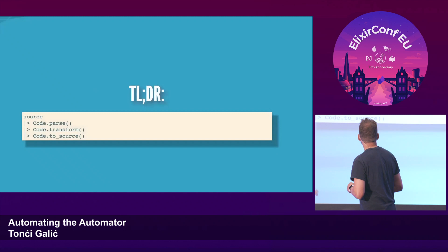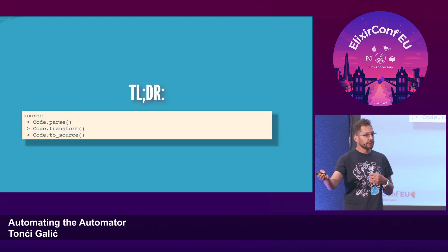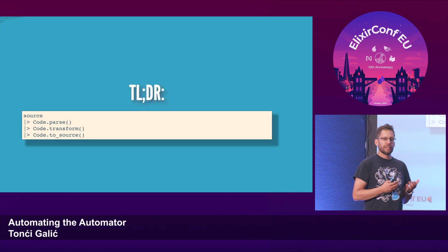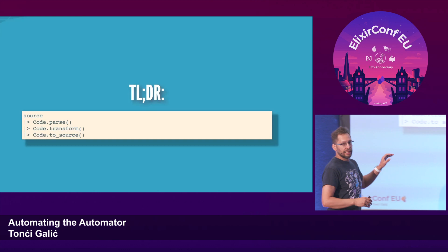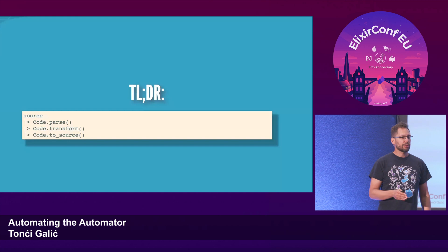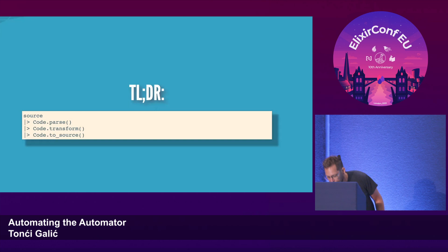Since this is a two-track conference, there is also another interesting talk going on. So the TL;DR: the summary of this talk is we'll go through how we can parse our source code, transform it, and turn it back into source code. If you can already imagine how that would work, there's a good chance this talk is not for you — I'm going to bore you, so please feel free to go to the other room.